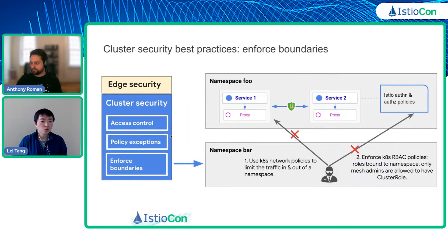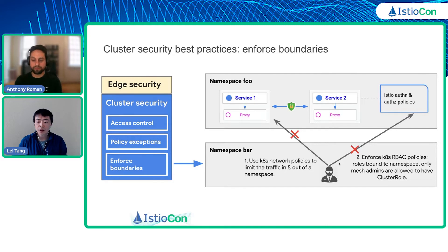Next I'll move to how to enforce boundaries in cluster security. In a cluster you may have multiple namespaces. The first principle is you can use Kubernetes network policies to limit the traffic in and out of a namespace, so attackers can't access services in that particular namespace. The second is you can also enforce Kubernetes RBAC policies and define roles bound to a namespace rather than roles bound to the entire cluster, and only allow mesh admins to have cluster roles. In this example, an attacker won't have permission to modify the authentication and authorization policy in namespace foo.